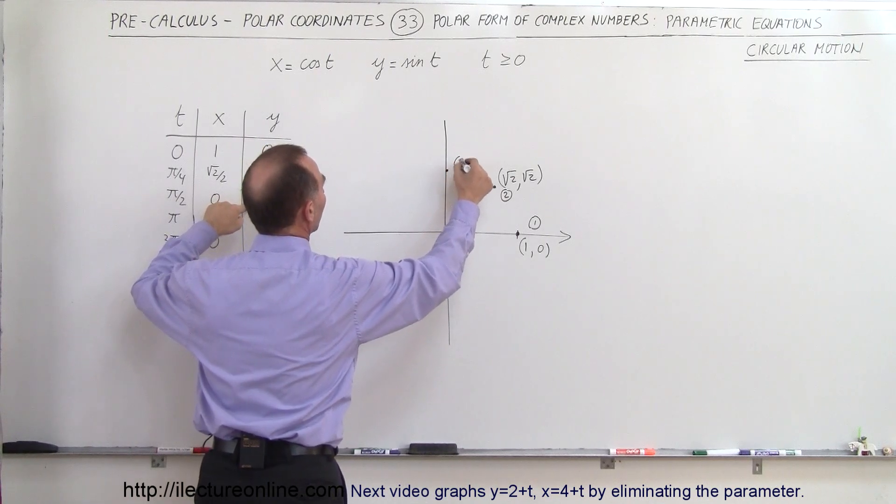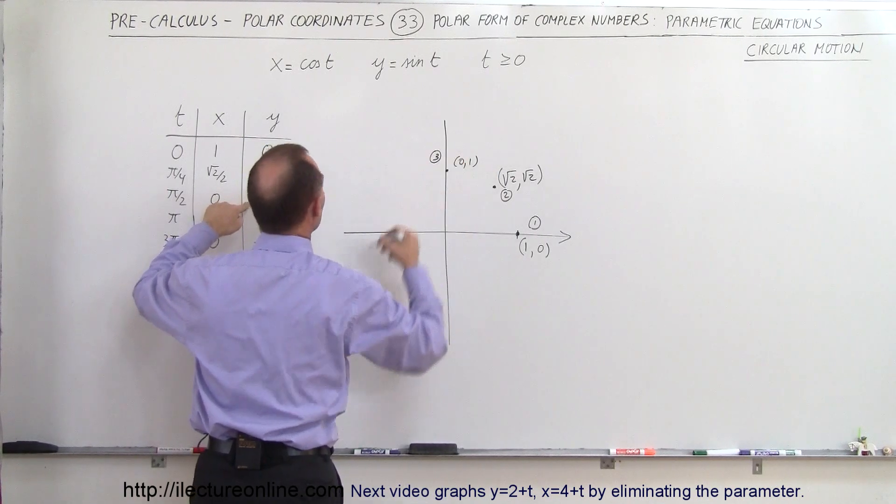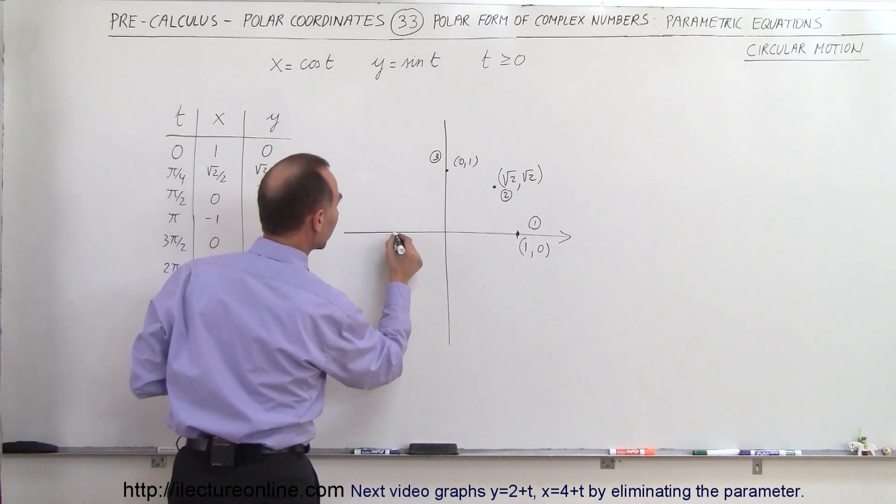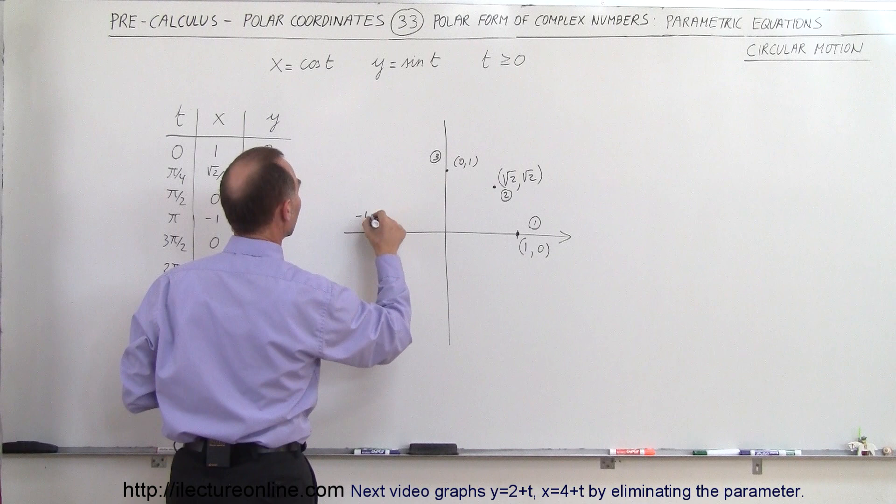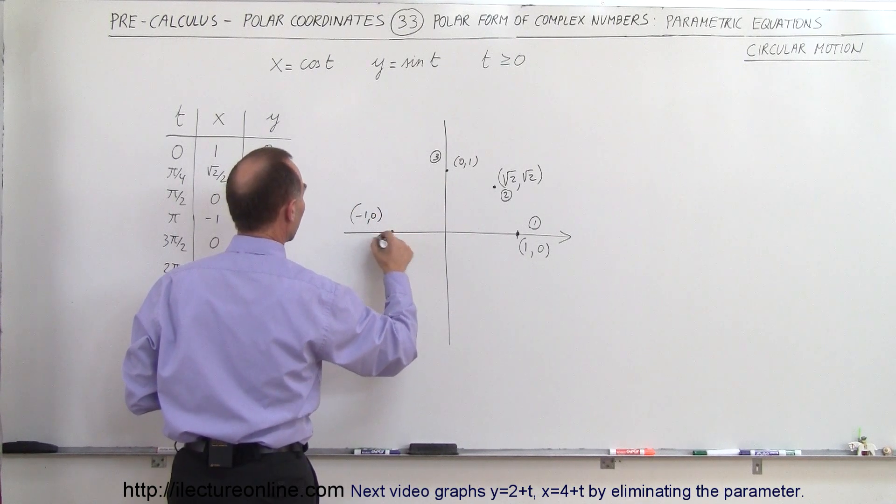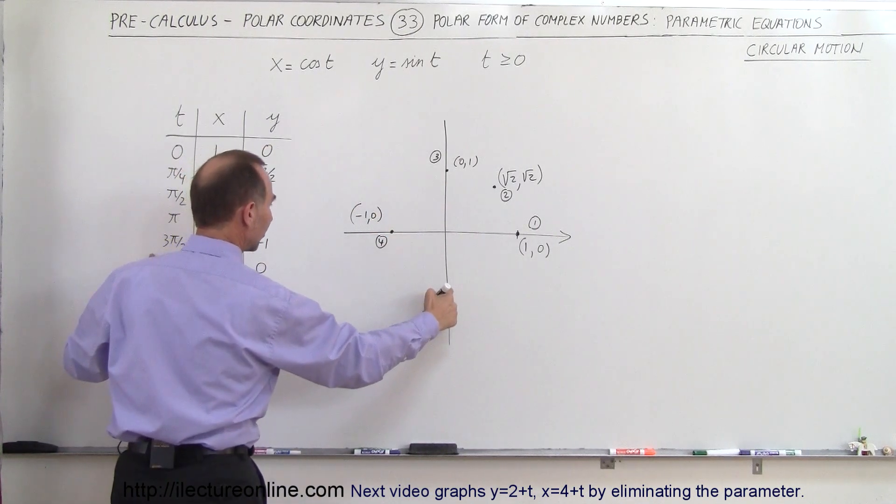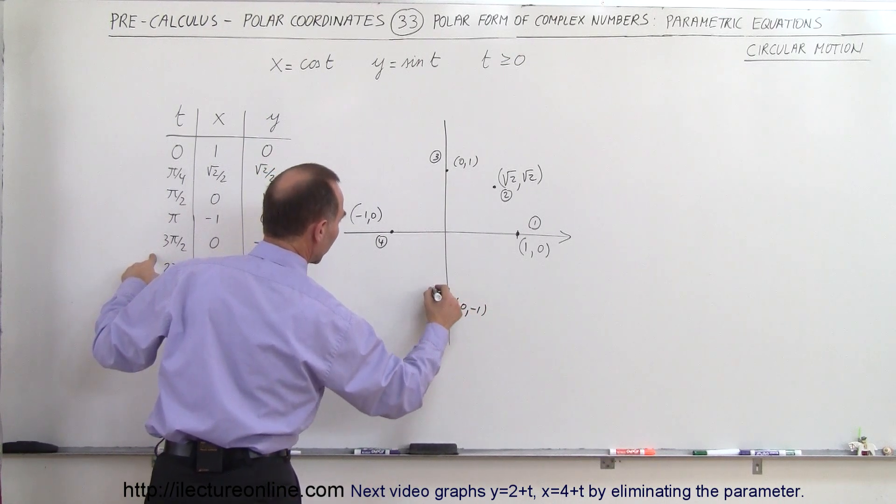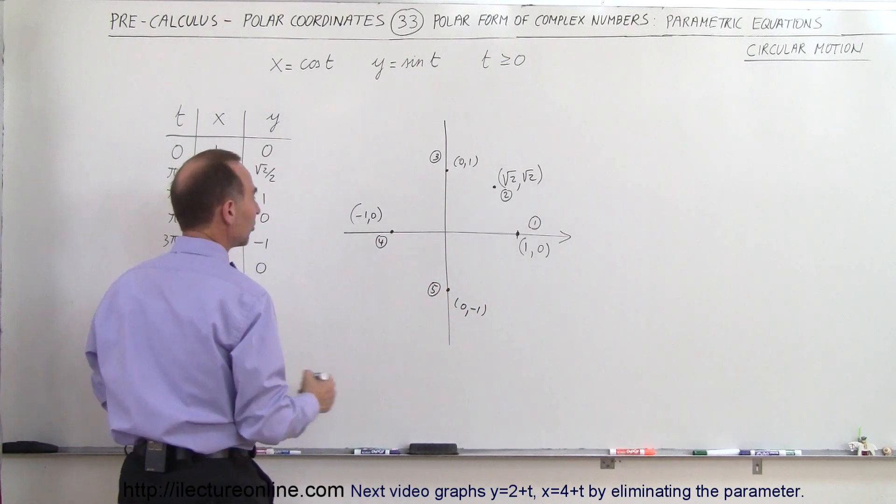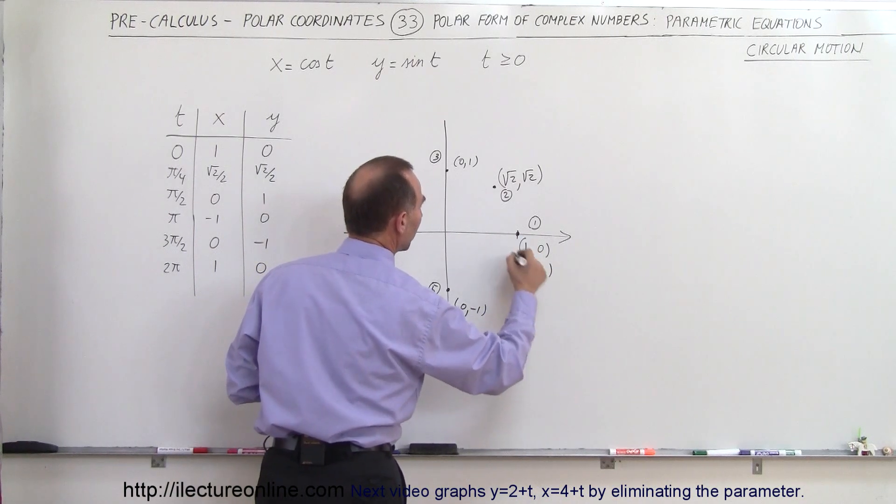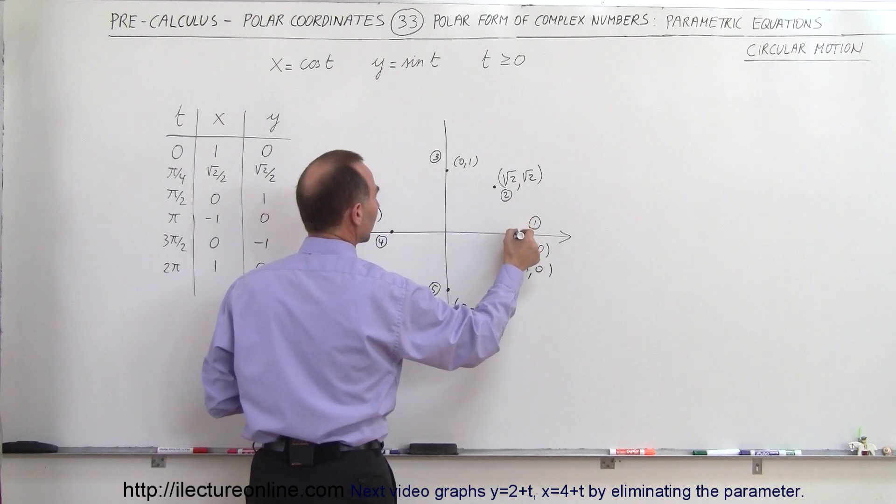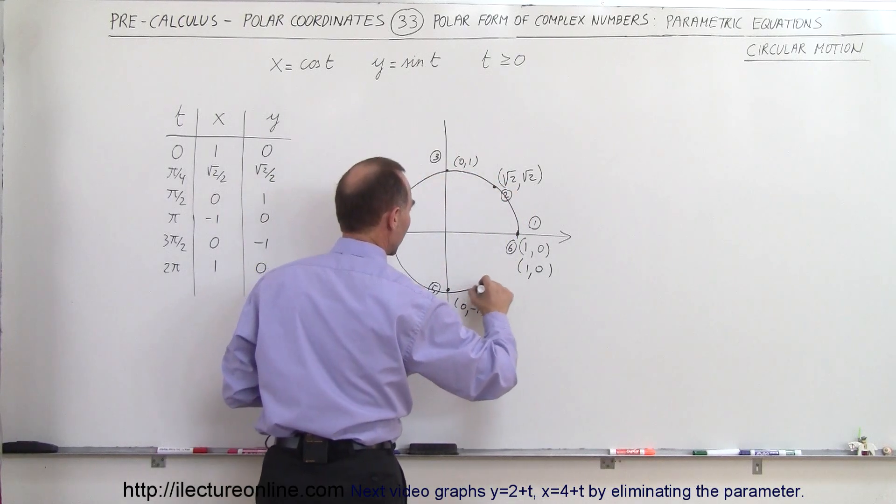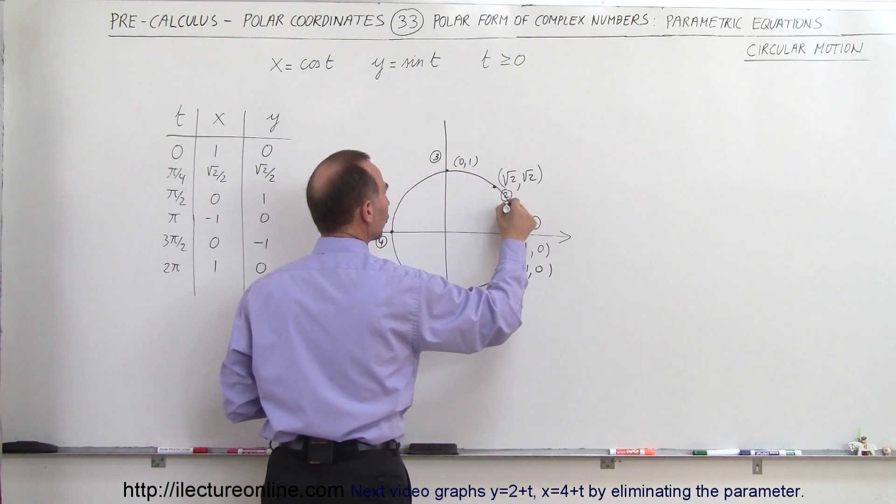Point number 4 can be made at (-1,0), that would be right over here. Point number 5 will be down here at (0,-1). Then point number 6 we're back over here at (1,0). When you connect all those dots, you have what we'd call circular motion.